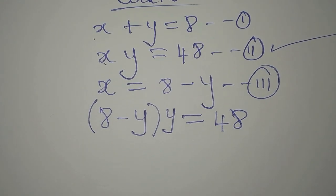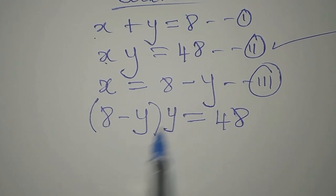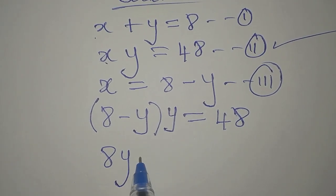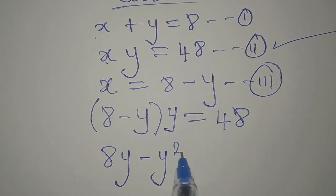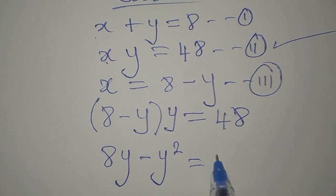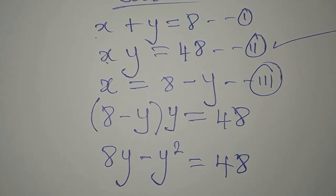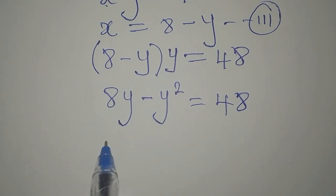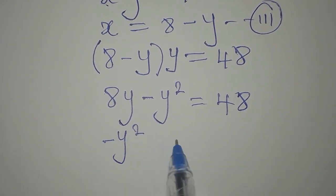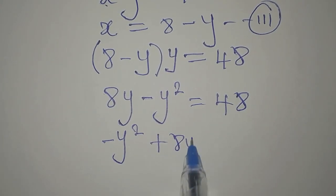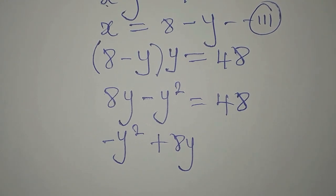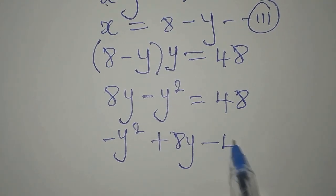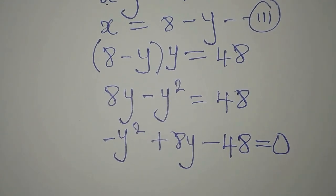Now let's open the bracket: 8 times y is 8y, minus y multiplied by y gives minus y squared, so that this equals 48. From here we can write: minus y squared plus 8y, and we bring 48 to the left, so we get minus 48, equal to 0.